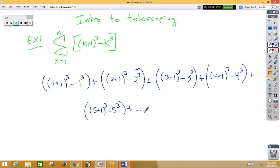So now let's observe what happens here. So if we look here, 1 plus 1 is really 2 cubed. We'll notice I have a positive 2 cubed here and a negative 2 cubed there. So those terms would cross out.